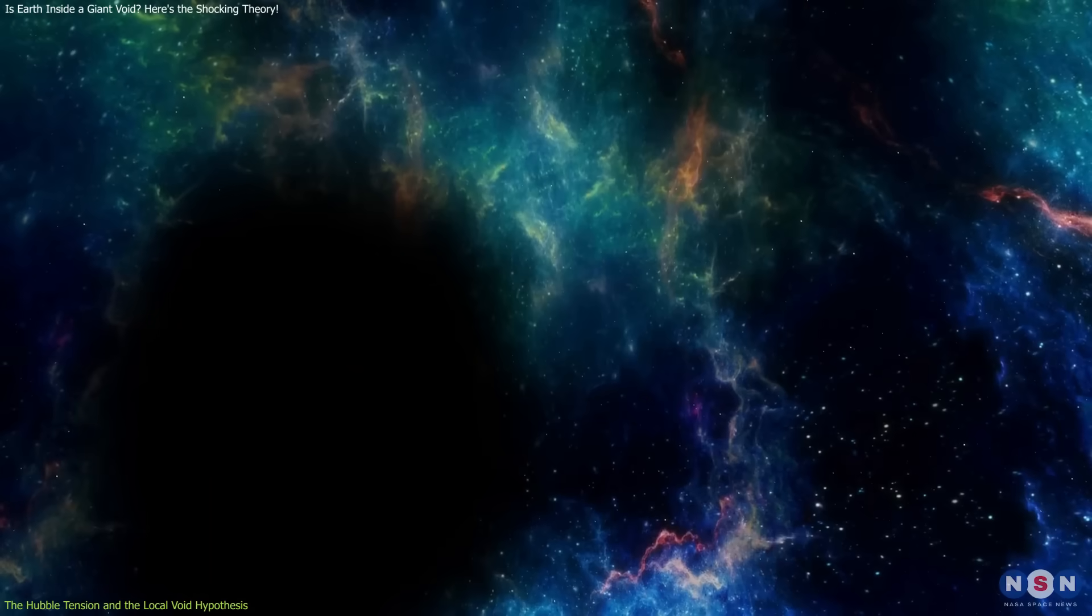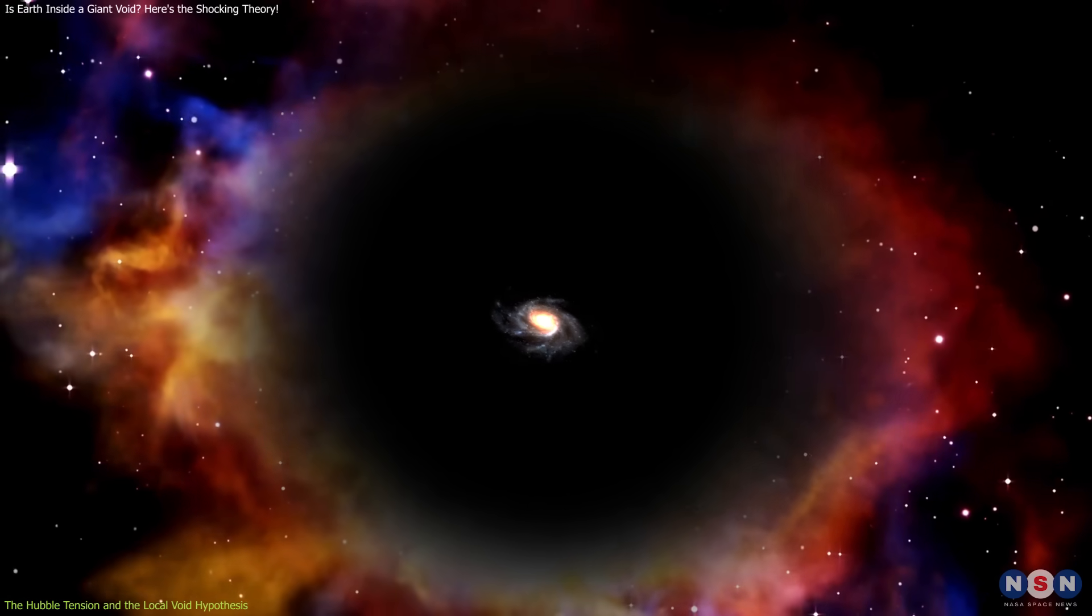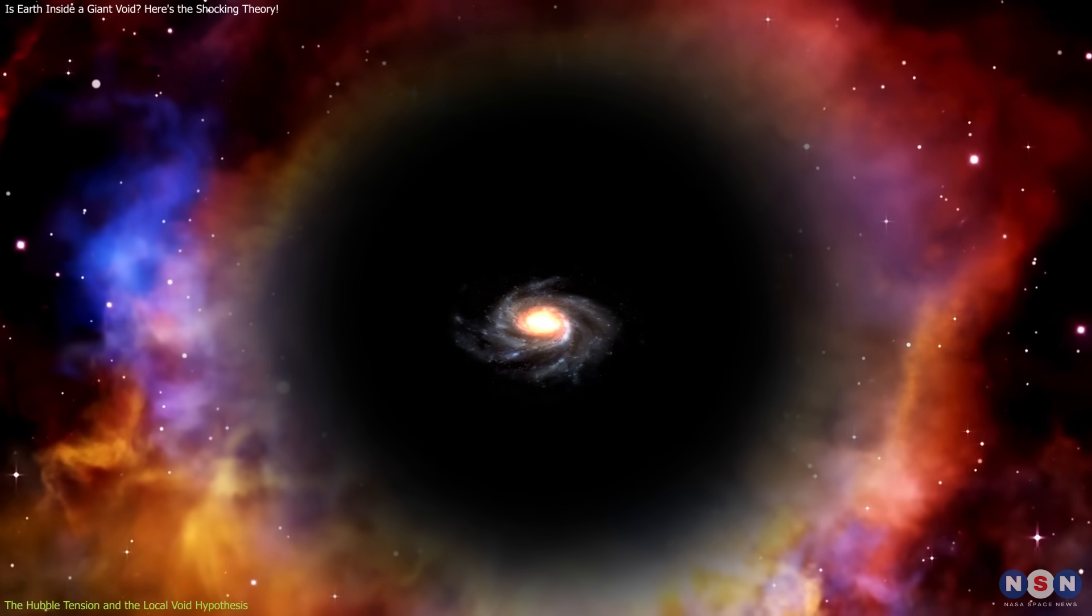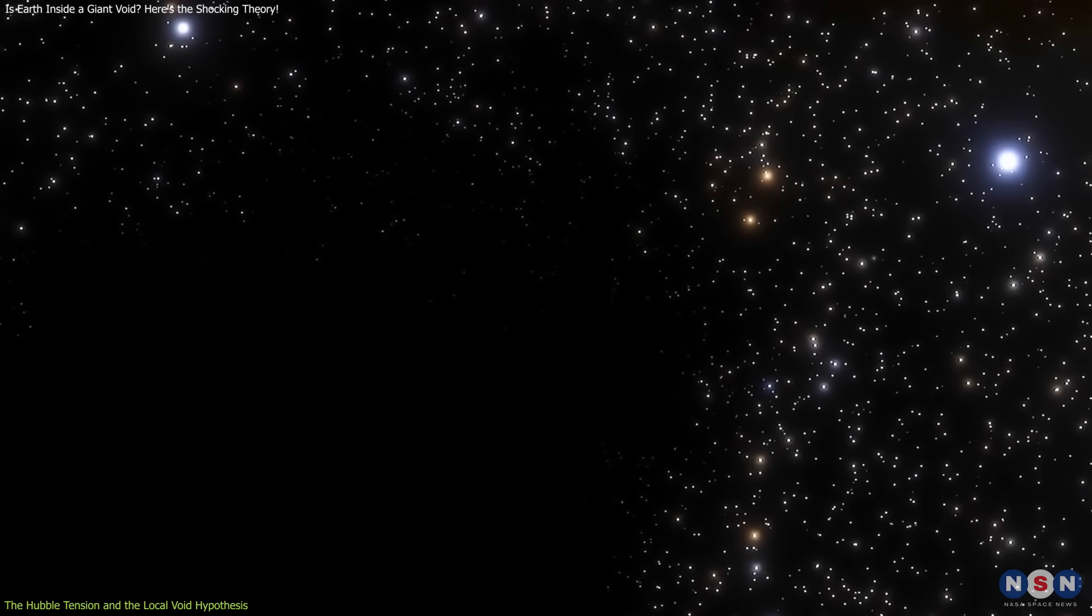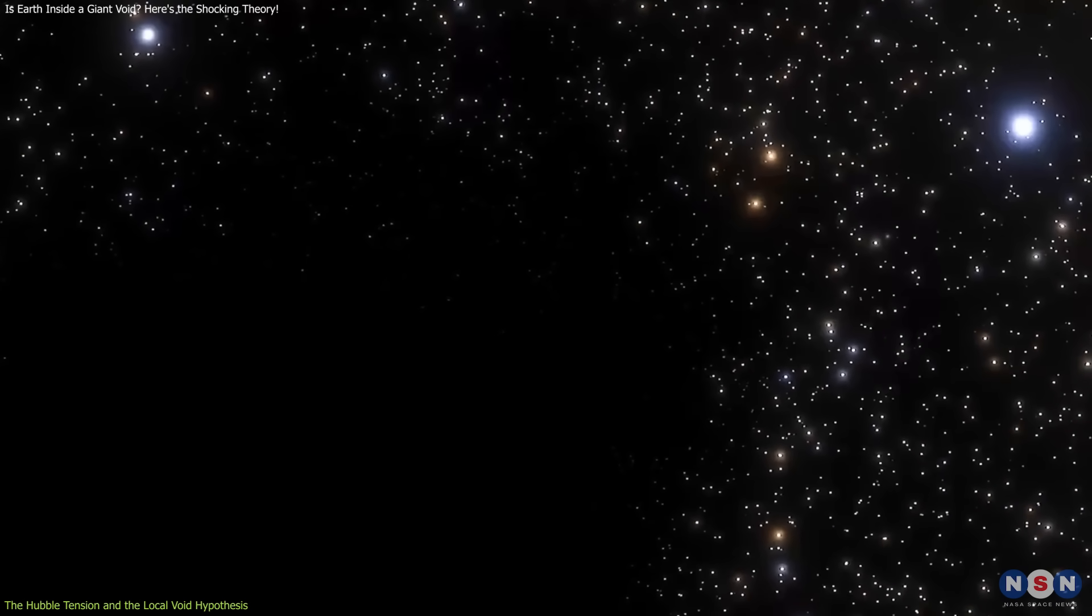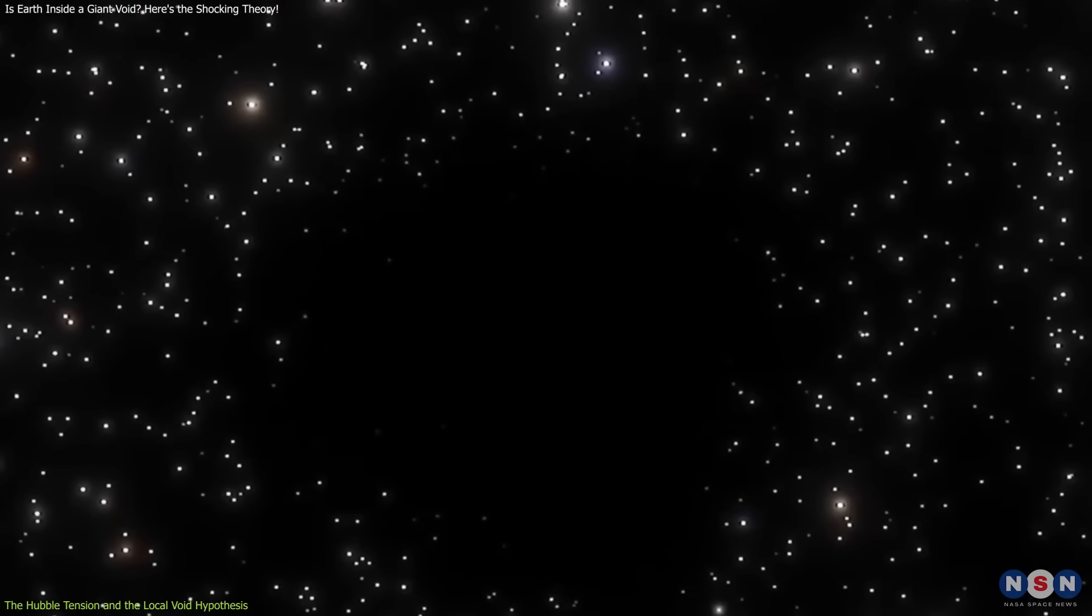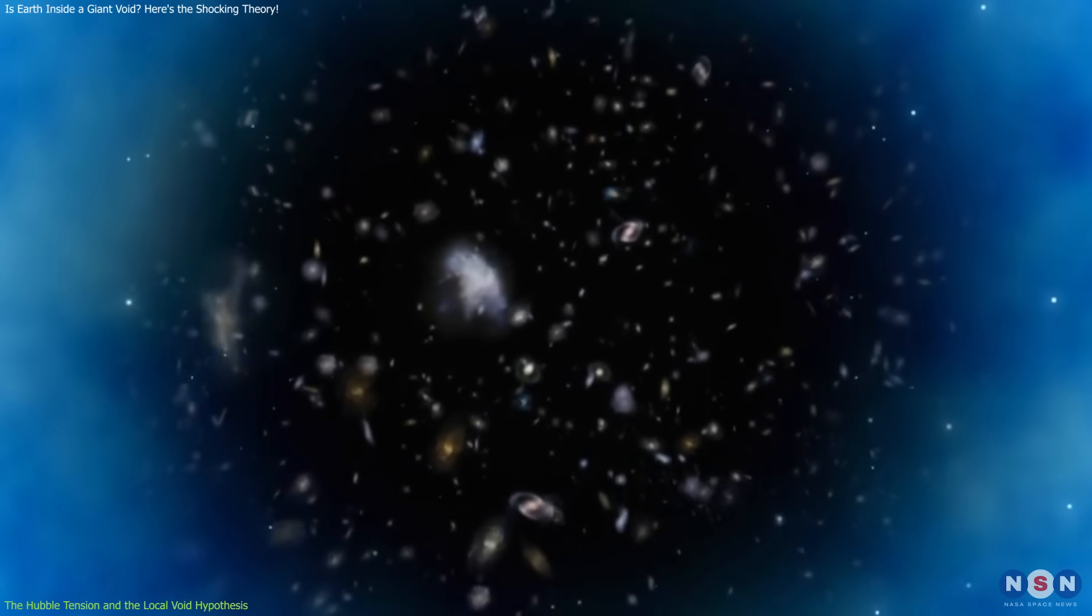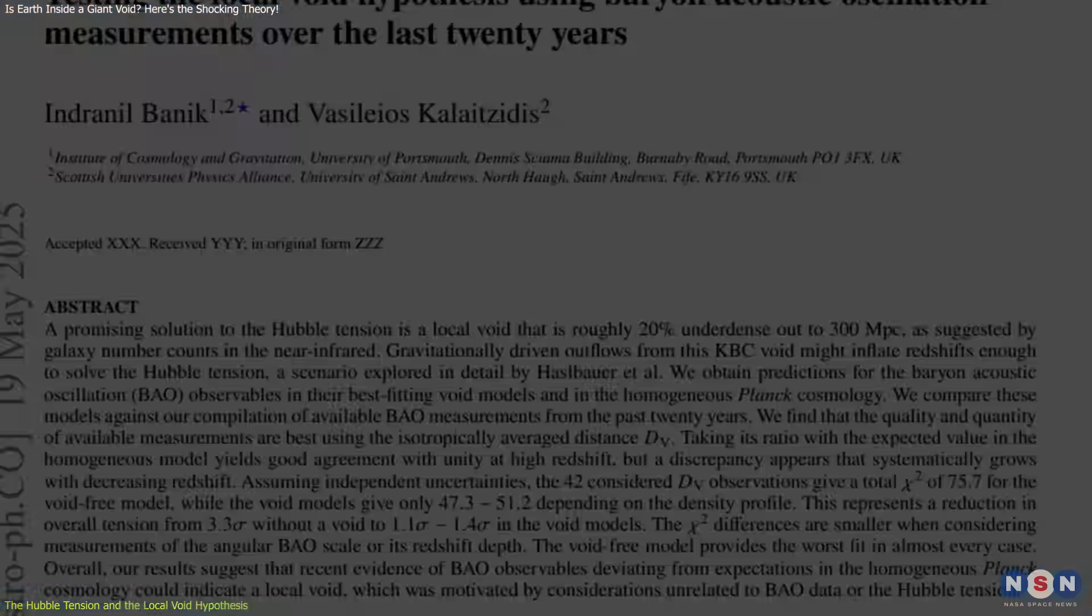One promising explanation for the tension is the local void hypothesis. The idea proposes that Earth and the Milky Way are located near the center of a vast cosmic void, a region where the density of matter is significantly lower than in the surrounding areas. Cosmic voids are not empty, but are sparsely populated with gas and galaxies. These voids make up a significant portion of the universe, but their effects on cosmic expansion have not been fully explored until recently.